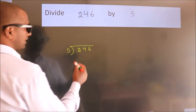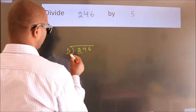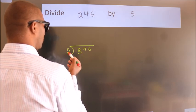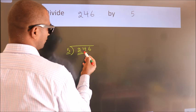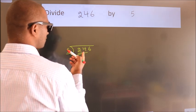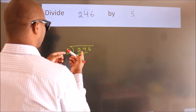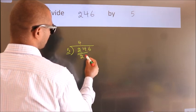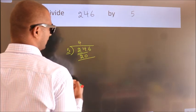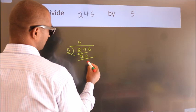Next. Here we have 2. Here 5. 2 is smaller than 5, so we should take 2 numbers: 24. A number close to 24 in 5 table is 5 fours 20. Now, we should subtract. We get 4.